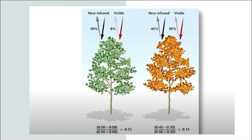Here we have two trees. One is really healthy and one is dying. If the near infrared is giving a 50% component and then in the visible we just have an 8% component, in this case of healthy vegetation we see an NDVI index of about 0.72. So approximately 0.72 would be the index value.